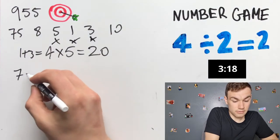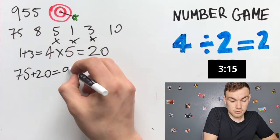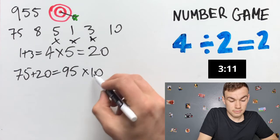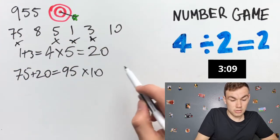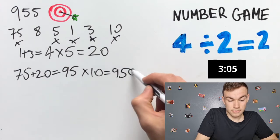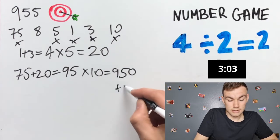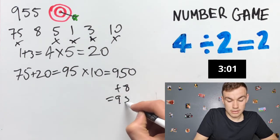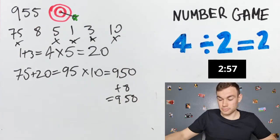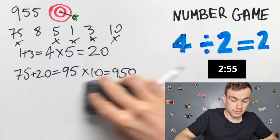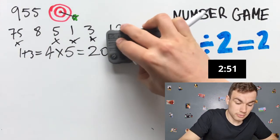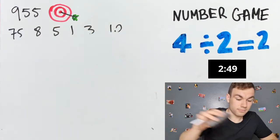75 plus 20 is equal to 95 multiplied by 10 is equal to 950 plus 8 is equal to 958. That is 3 away from 955. Not good enough. I will try another way.